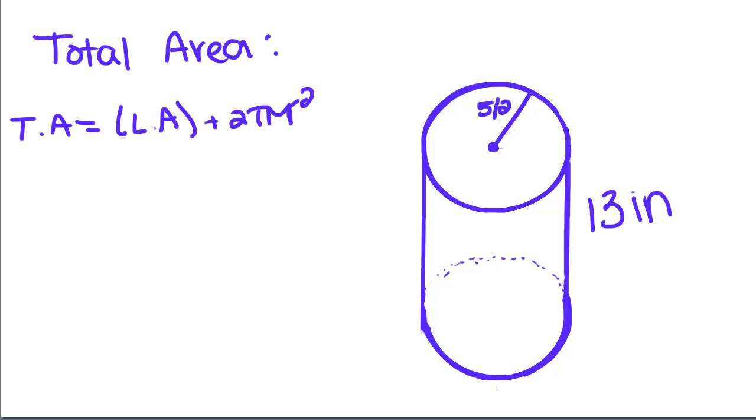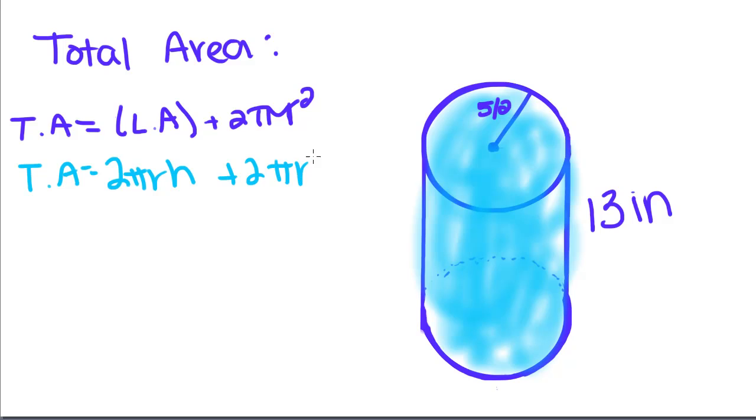Now we have one last thing we're going to learn: total area. When we find the total area of a cylinder, we are finding the surface area of this entire can. We're finding all of this. That's why when we find our total area, we take our lateral area, which is 2πrh, plus 2πr².